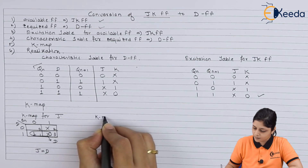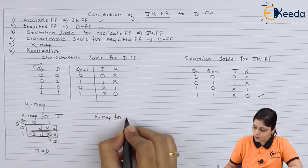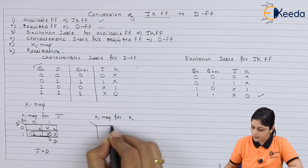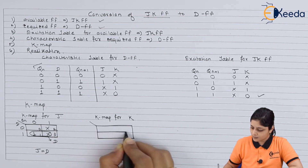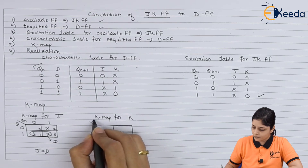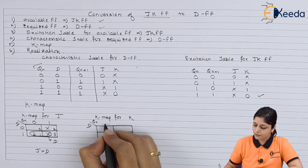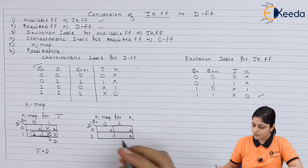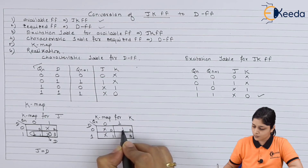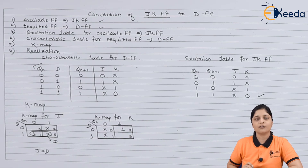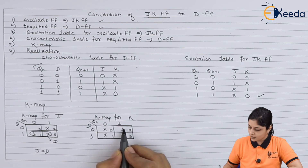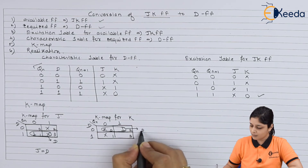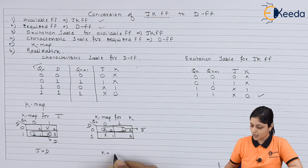Now we will draw the K-map for K. Again you take two variables Qn and D. You insert the values — X, X, X, X and 1 — focusing on 1s only. After grouping, the equation for this group is D̄, so finally K equals D̄.